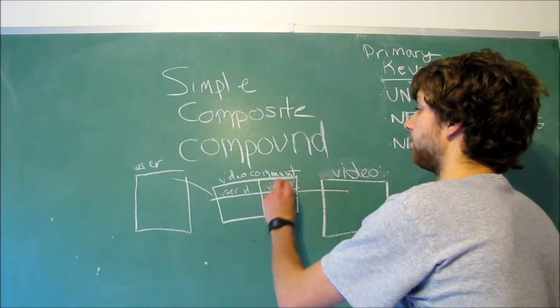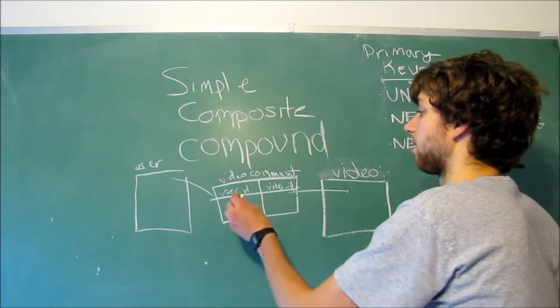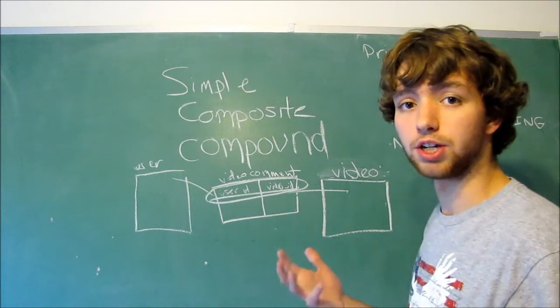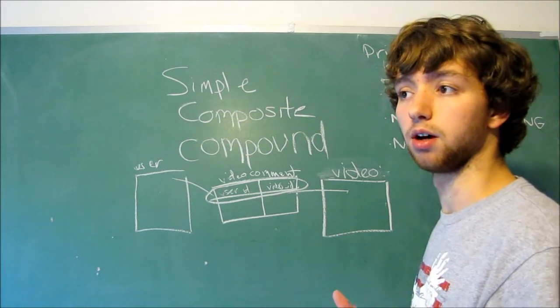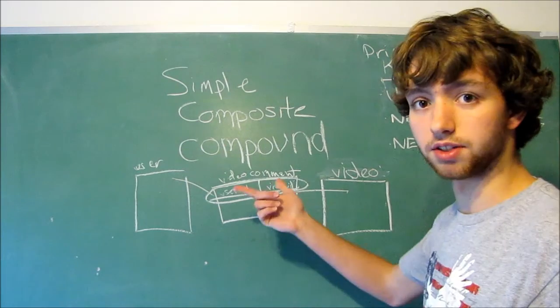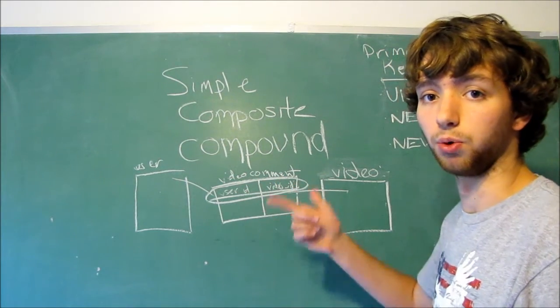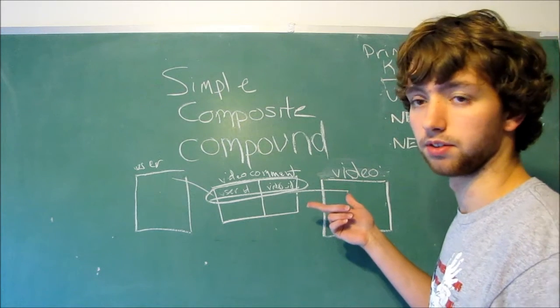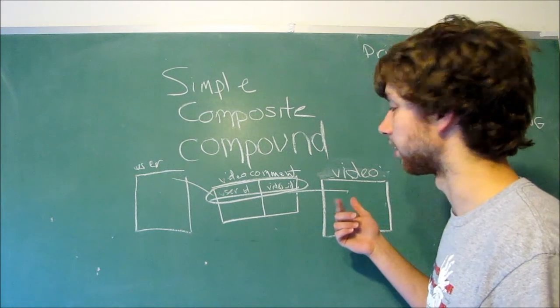You can see that the entire key itself, every user and video ID combination has to be unique. That might be a bad example because a user could comment on the same video more than once. So, this is probably not the best example. Let me think of a good one.